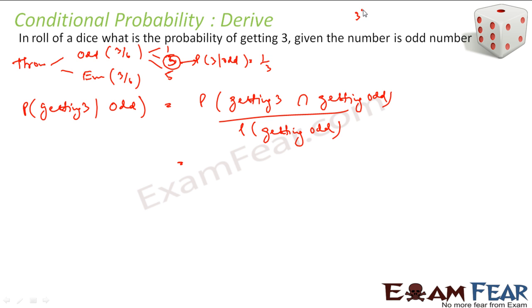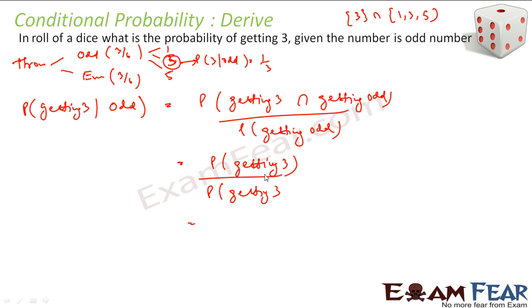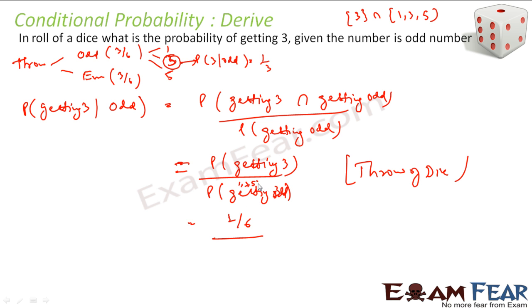Now using the formula: probability of three given odd equals probability of three intersection odd divided by probability of odd. The set {3} intersected with {1, 3, 5} gives {3} only. So this is probability of getting three — which is one by six (no conditional probability here, just a normal die throw) — divided by probability of odd, which is three by six. Dividing gives one by three, the same answer.